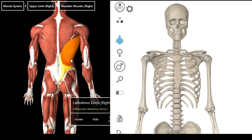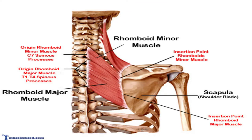Latissimus dorsi is supplied by the thoracodorsal nerve — from the posterior cord of your brachial plexus. Other muscles include rhomboid major and minor, which aren't shown here but I'll give you a pop-up. They get nerve supply from the dorsal scapular nerve, which comes from root C5 of the brachial plexus. You need to know your brachial plexus to understand rhomboid major and minor.